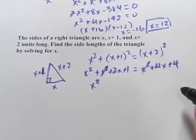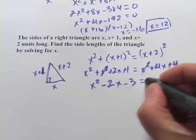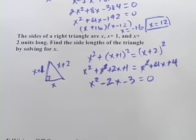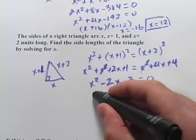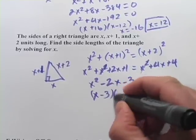We'll have x squared minus 2x minus 3 equals 0. And then I think we can factor this. So that's x minus 3 and x plus 1.